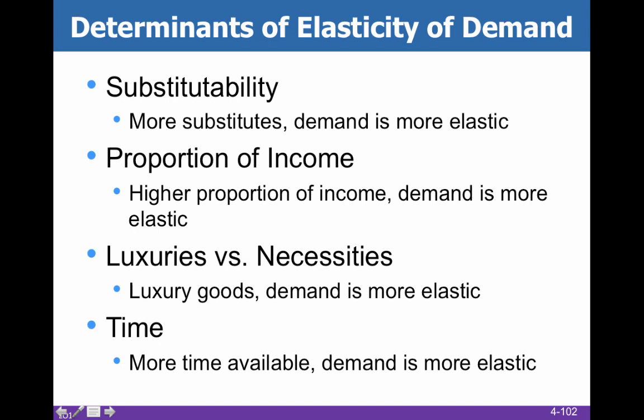Now we have to learn the determinants — what makes something more or less elastic or inelastic. Substitutability: the more substitutes there are, the more elastic demand is. With Coke and Pepsi, if you believe they're good substitutes for each other, then as soon as the price of Pepsi changes, even if you prefer Coke when they're the same price, you're going to switch. If there are lots of substitutes, you get elastic demand.